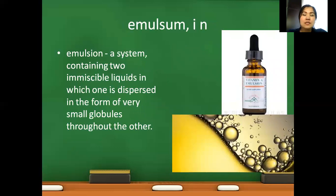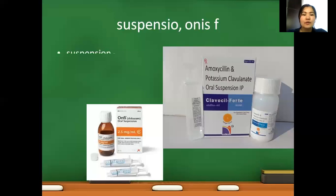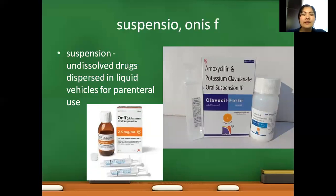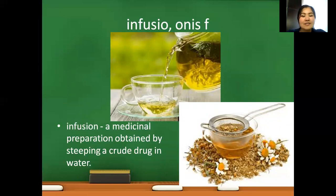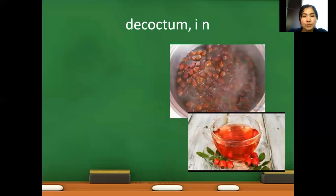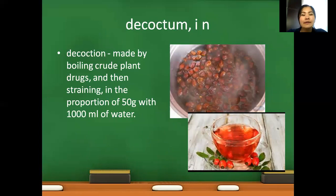Emulsion — a system containing two immiscible liquids in which one is dispersed in the form of very small globules throughout the other. A simple example of emulsion is a mixture of oil and water. Suspensio — undissolved drugs dispersed in liquid vehicles for parenteral use. Infusio — infusion — a medicinal preparation obtained by steeping a crude drug, meaning dried vegetables or drug plants, in water. Decoctum — made by boiling crude plant drugs and then straining, used in the proportion of 50 grams with a thousand milliliters of water.